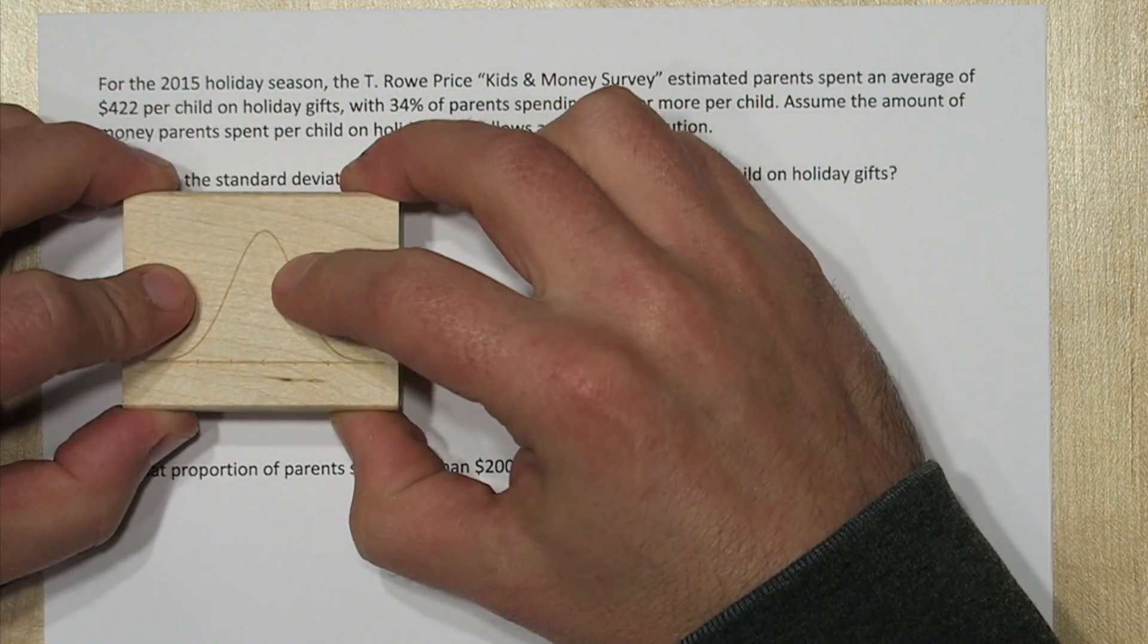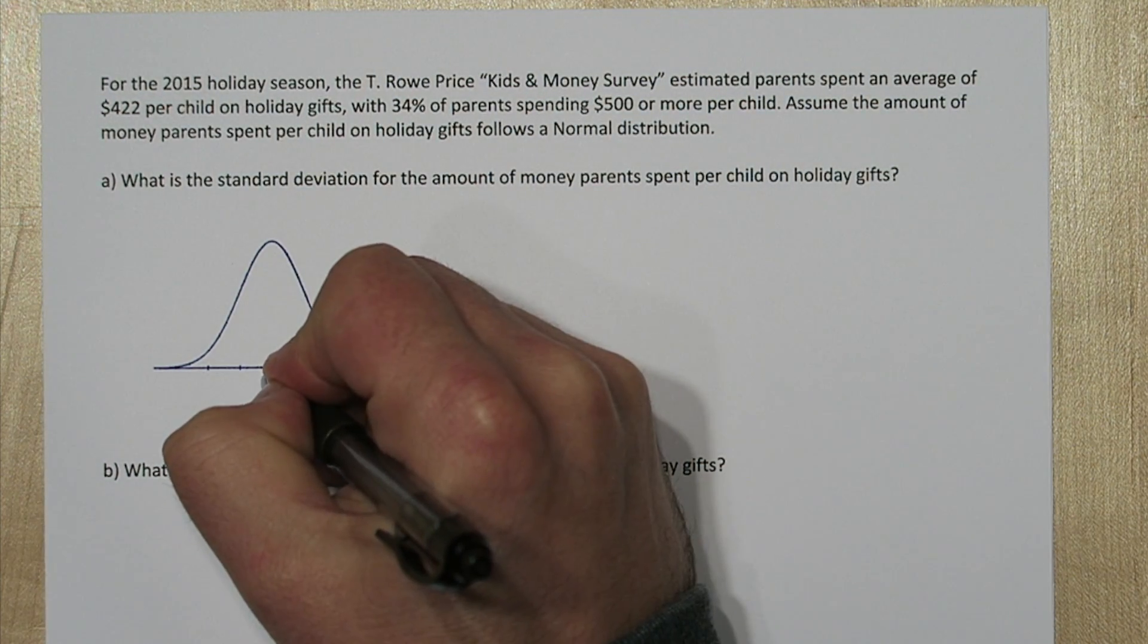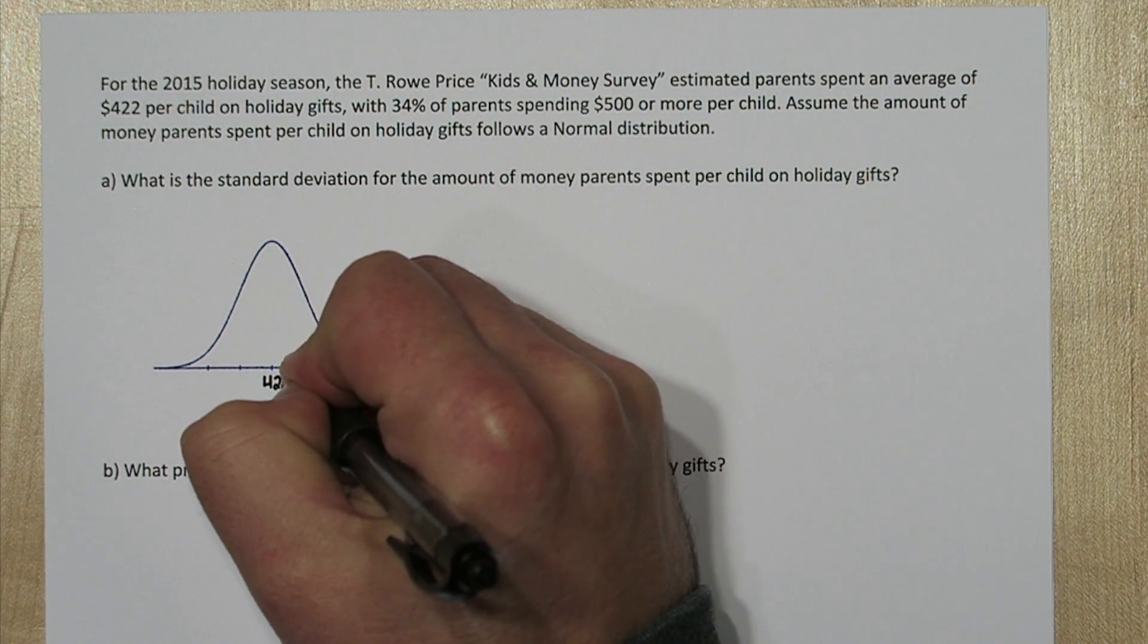Alright, the key here is we know it's normally distributed. So let's start by stamping a normal distribution. We know the mean is 422. That's right here in the middle.